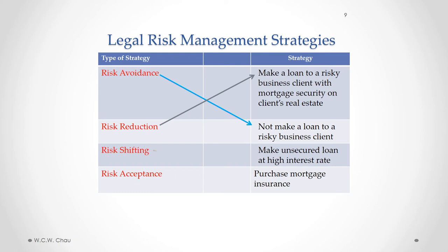The third type of legal risk management strategy is called risk shifting, where the risk is shifted to another person or company altogether. Here, the example is that mortgage insurance would be purchased. The borrower would pay to purchase mortgage insurance from a mortgage insurance company, and if the loan went into default, the bank could ask the mortgage insurance company to pay the outstanding amount.